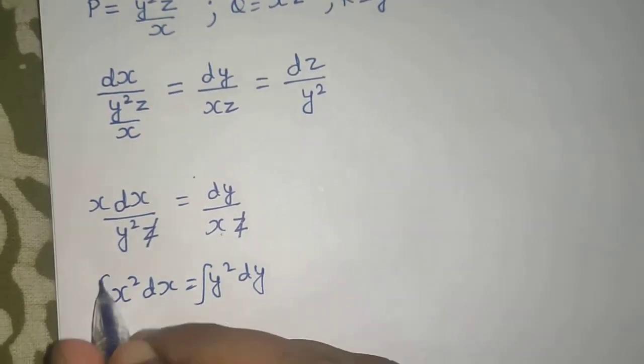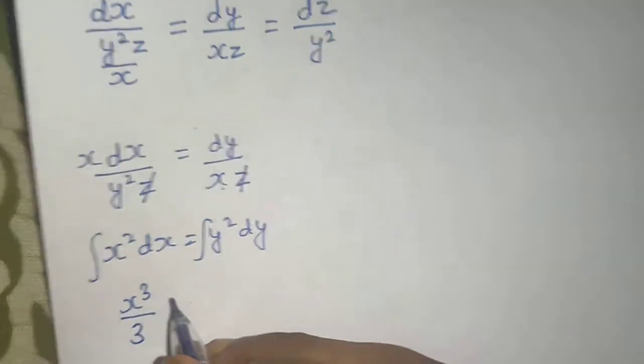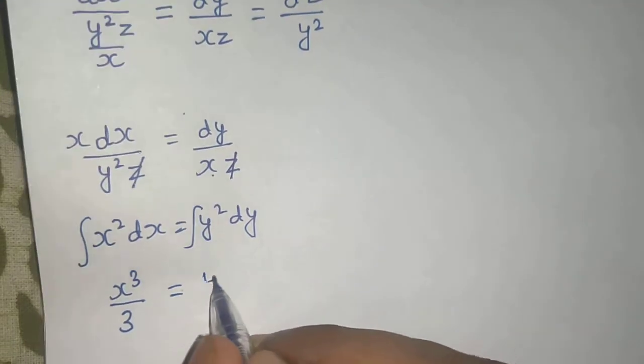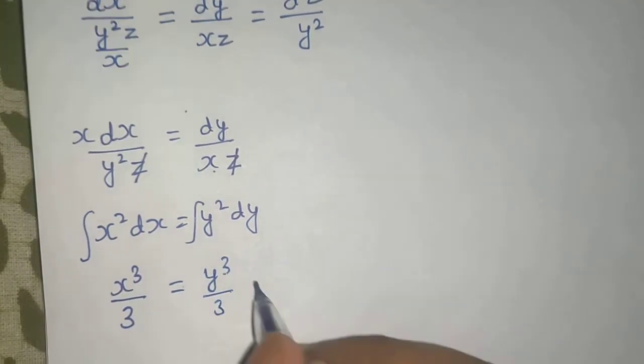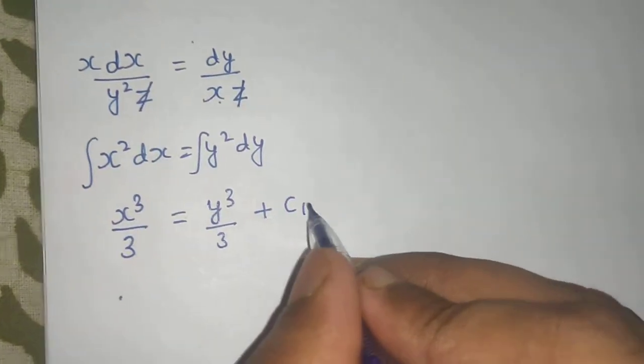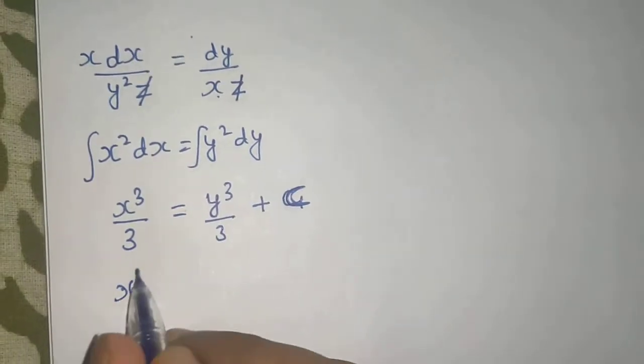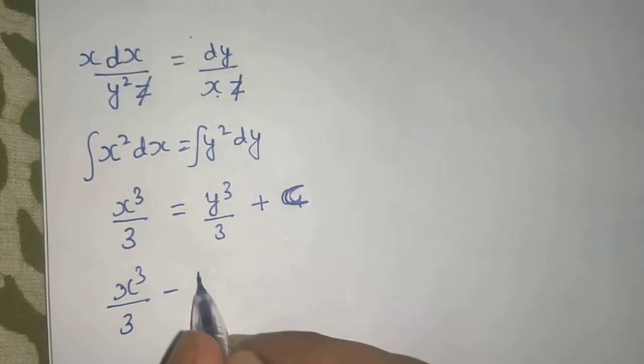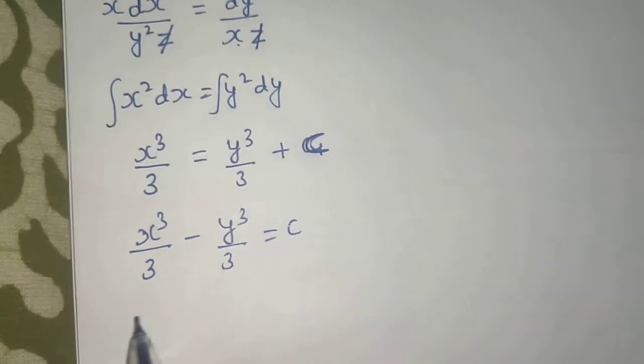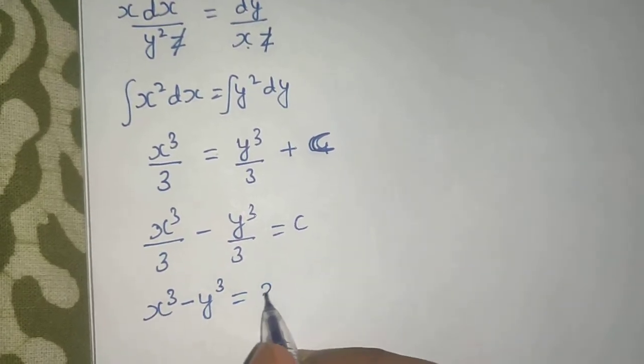If I integrate both sides, integration of x squared is x cube divided by 3 and integration of y square is y cube divided by 3 plus constant. Now x cube divided by 3 minus y cube divided by 3 equals to C. x cube minus y cube equals to 3C.